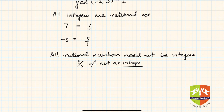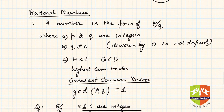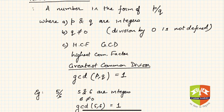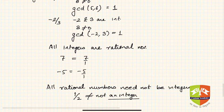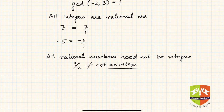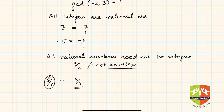So there are three criteria for rational numbers: it must be in the form p by q where p and q are integers, q must not be equal to 0, and the GCD of p and q must be 1. If a fraction like 6 upon 8 has common factors, it is not in rational form yet, but it can be reduced to 3 by 4, which is the correct rational representation.